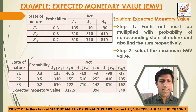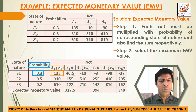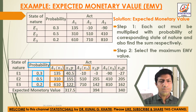For Act 1, multiply each value by its probability. Act 1 × probability: 135 × 0.3 = 40.5; Event 2: 310 × 0.5 = 155; Event 3: 610 × 0.2 = 122. These are the weighted values for Act 1.